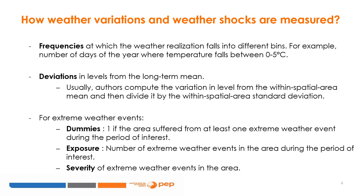For droughts, we can use the SPEI — the Standardized Precipitation Evapotranspiration Index — elaborated by Vicente Serrano and co-authors in 2010, based on monthly precipitation and temperature data. It presents both positive and negative values, identifying respectively wet and dry events. For example, an SPEI lower than minus 2 indicates an extreme drought, while an SPEI between minus 1 and minus 1.49 indicates a moderate drought.